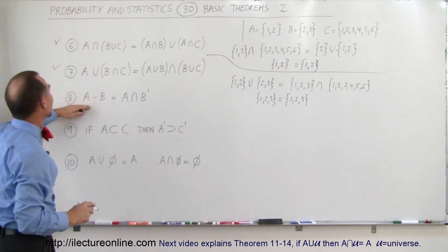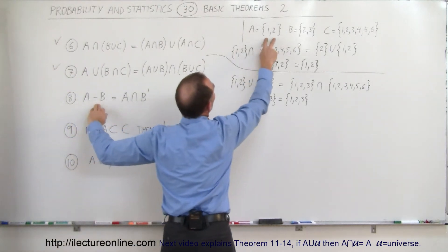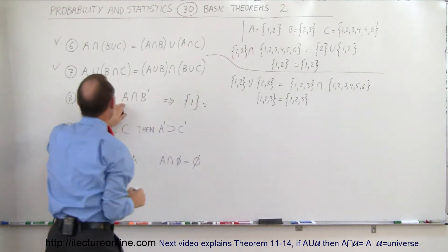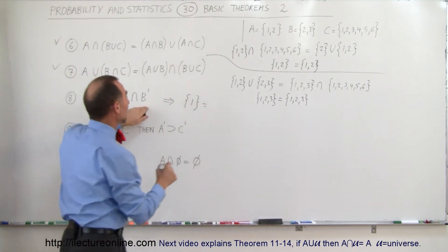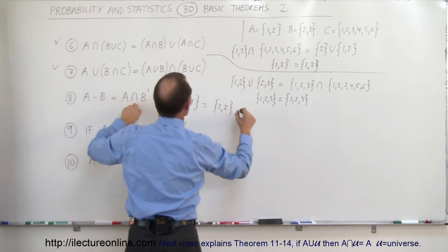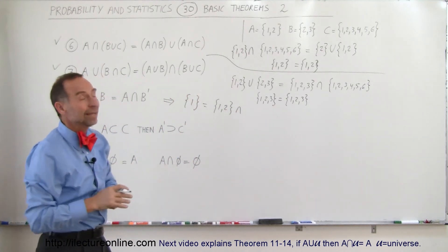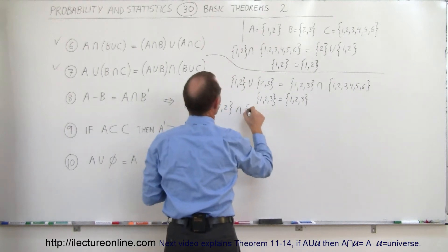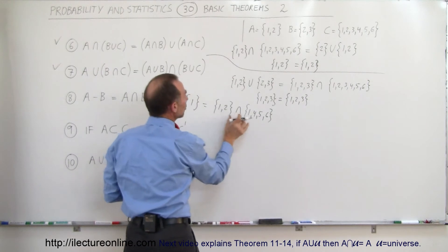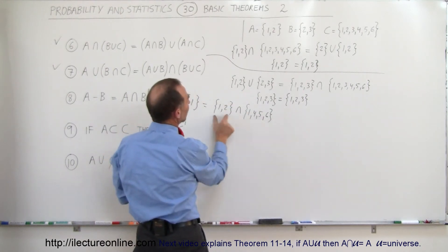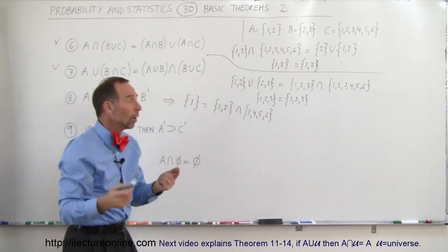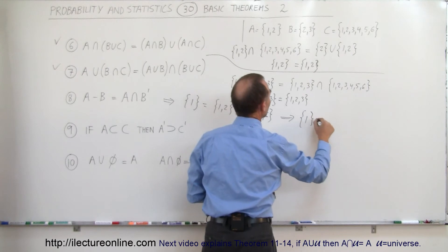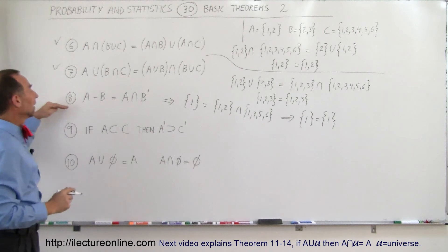Now we have theorem eight: A but not B. Everything in A but not belonging to B — the only thing we have left is one. So that would be one, and that should equal A intersected with not B. A is one and two, and we intersect with not B. The sample space is assumed to be one through six, so everything not in B would be one, four, five, and six. The intersection — everything common between these two — would only be one. So therefore we have proven that one equals one, and this is correct.